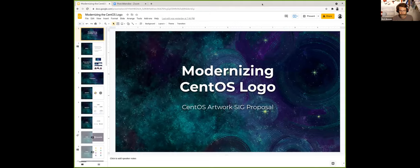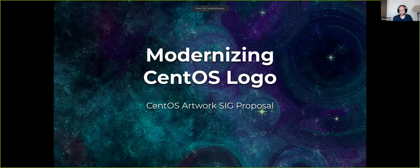The first agenda item is a presentation from the artwork SIG on some updates to our visual design. Can you share your screen? Do we need to grant you permission? I'm going to try to share. Go right ahead. I'm sharing now — can you see my screen? Yes. This is the presentation of the long issue we have in the artwork SIG about the CentOS logo redesign.